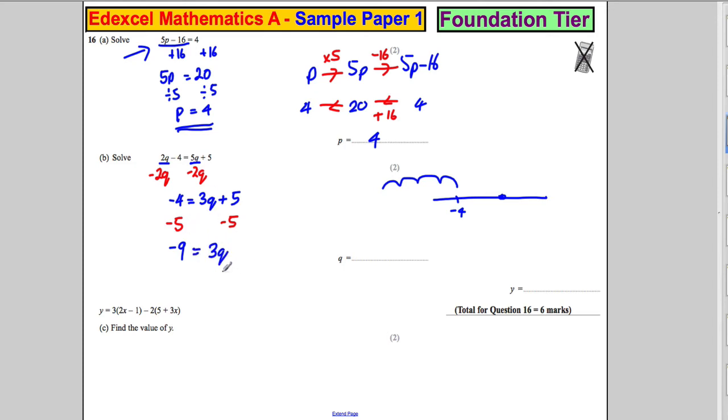And I want Q all by itself, so I'm going to divide both sides by 3. And I'm going to get that Q is negative 3. 9 divided by 3 is 3, so negative 9 divided by 3 is negative 3. So, Q is equal to negative 3. And I should check it up there. 2 times negative 3 is negative 6. Negative 6 take away 4 is negative 10. 5 times negative 3 is negative 15. Add 5 is also negative 10.